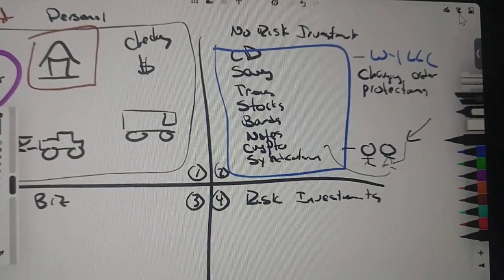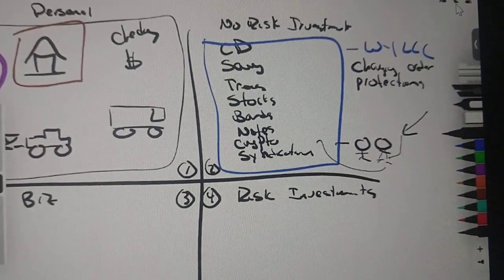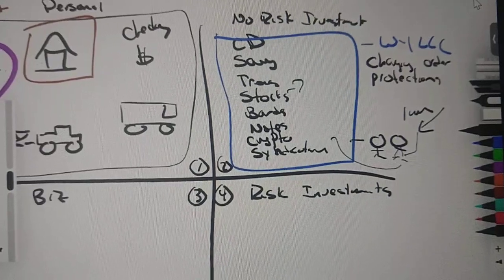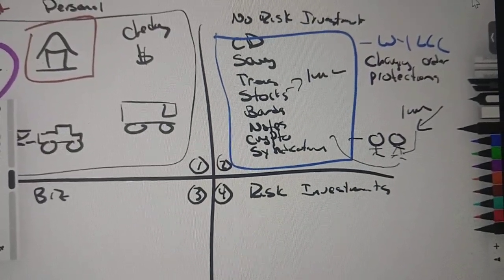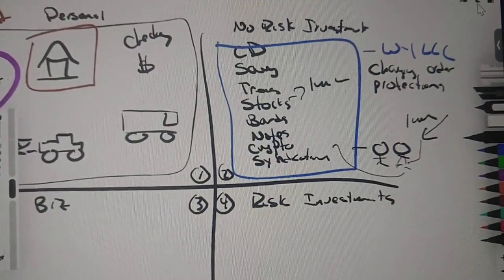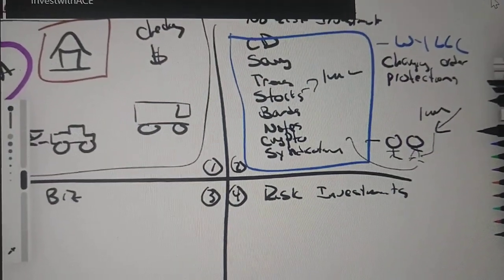So what does that mean? That means if somebody sues me and they get a judgment against me, they say, 'Oh, you owe me a million dollars,' and inside of this entity right here I have, say, a million dollars—they can't touch those assets. I own them still. They're still mine. I still control the entity. They can't take the entity from me.